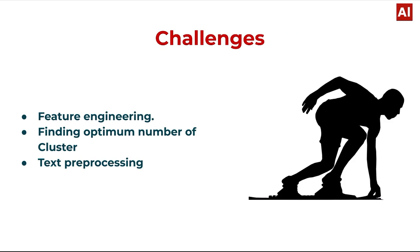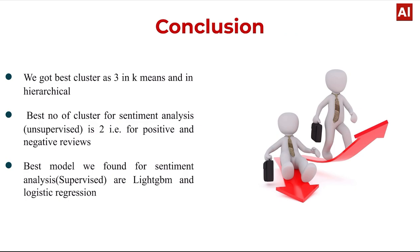Challenges faced during this project include feature engineering, which was a difficult topic, finding the optimum number of clusters, and text processing. Conclusion: the best number of clusters is three for K-Means and hierarchical clustering. For sentiment analysis, the best number of clusters is two (positive and negative reviews). The best models found for sentiment analysis are LightGBM and logistic regression. Thank you.